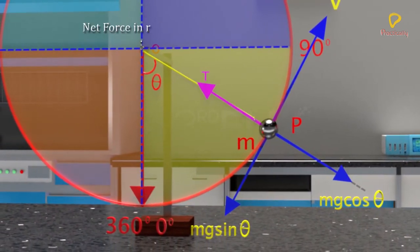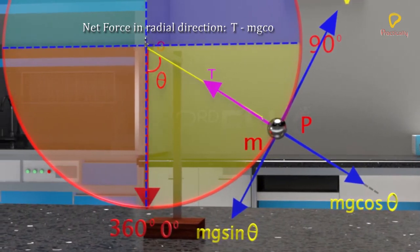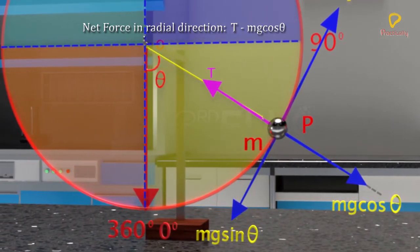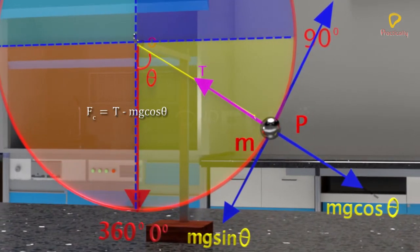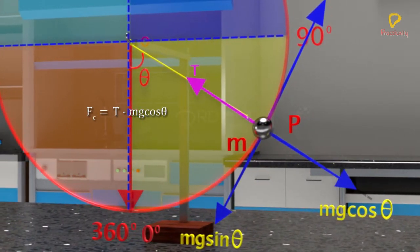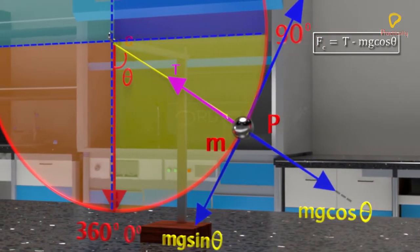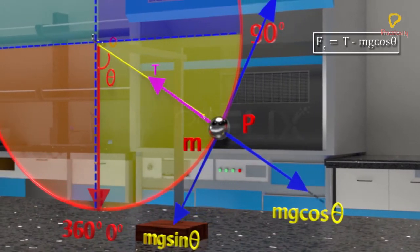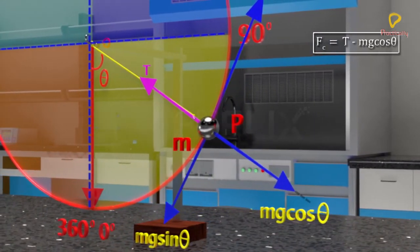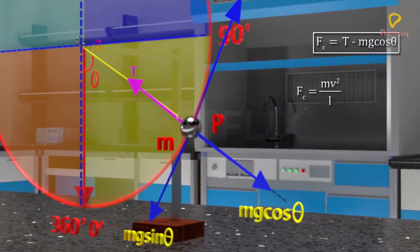Net force acting along the radial direction is T minus Mg cos theta. This force along the radial direction is the net centripetal force, Fc. But we know that the centripetal force required to keep the mass M moving with tangential speed V in a circular motion of radius L is equal to Mv square by L.